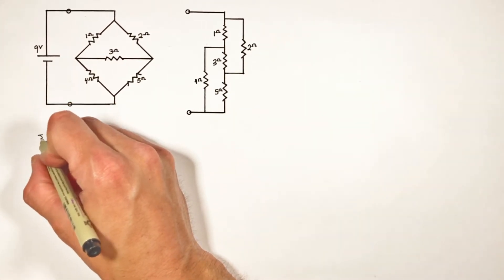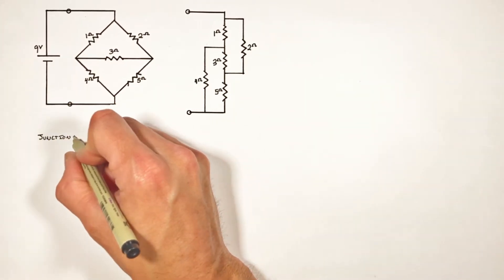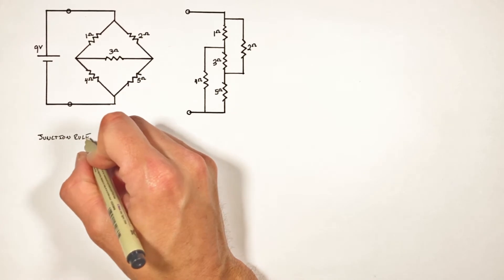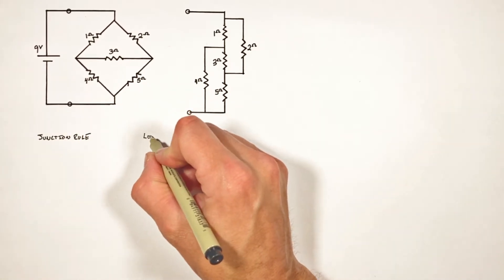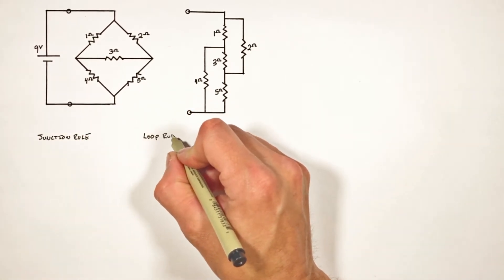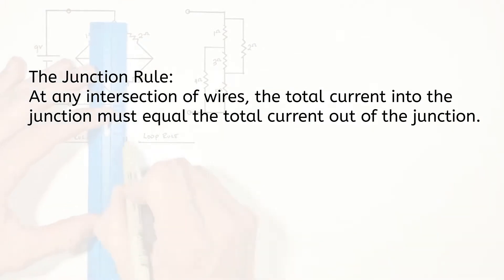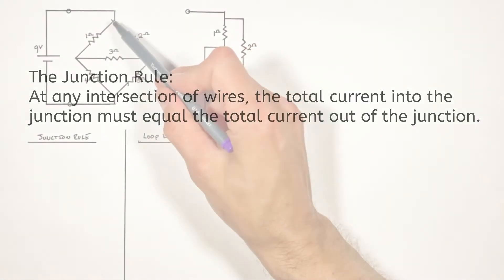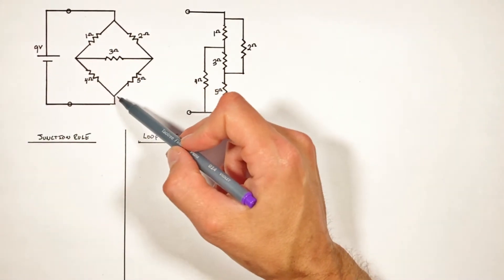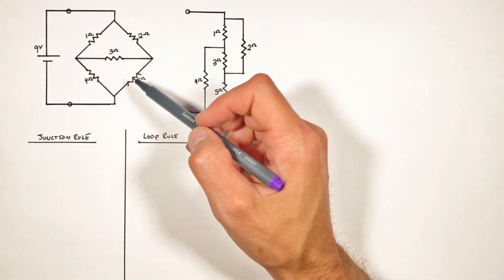That leads us to two concepts in circuits: the first being the junction rule and the other being the loop rule. The junction rule tells us that at any intersection of wires, the total current running into that junction has to equal the total current out of that junction. So let's take a look at each of the four junctions in our original circuit.